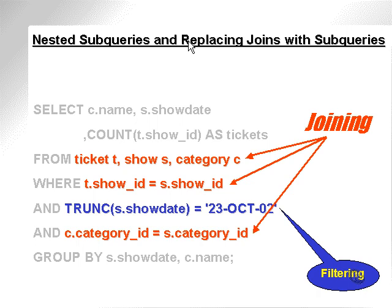Nested subqueries and replacing joins with subqueries. We can sometimes replace a join with a subquery, and it can make the query faster. Let's take a quick look at this query. In this query, we're selecting from ticket, show, and category.